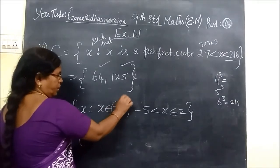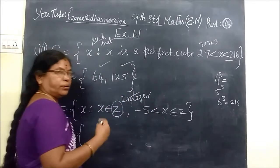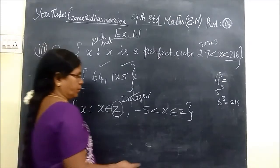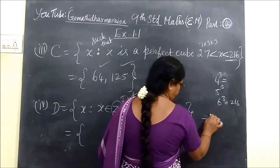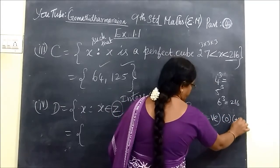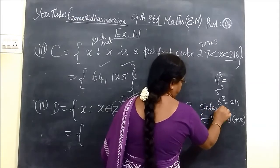Here Z means integer. So integer means you write negative union of 0 union of positive number. This one is negative, then zero, then positive. This is Z.